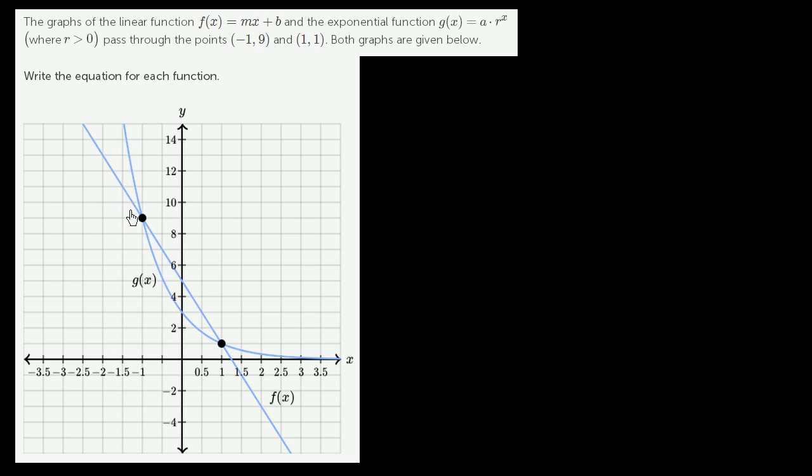Given the fact that this exponential function keeps decreasing as x gets larger and larger, it's a pretty good hint that our r is going to be between 0 and 1, that g(x) keeps approaching closer and closer to 0 as x increases. But let's use the data they're giving us, the two points of intersection, to figure out what the equations of these two functions are.